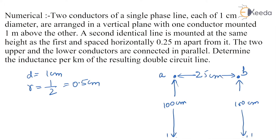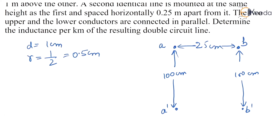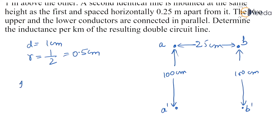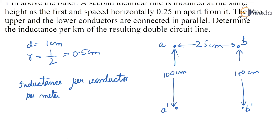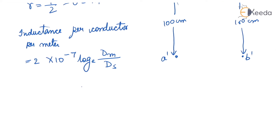The two upper and lower conductors are connected in parallel — determine the inductance per kilometer. We know inductance per conductor per meter is equal to 2 × 10⁻⁷ × ln(dm / ds), where dm is the mutual GMD and ds is the self GMD. So first, find out the mutual GMD dm and self GMD ds.